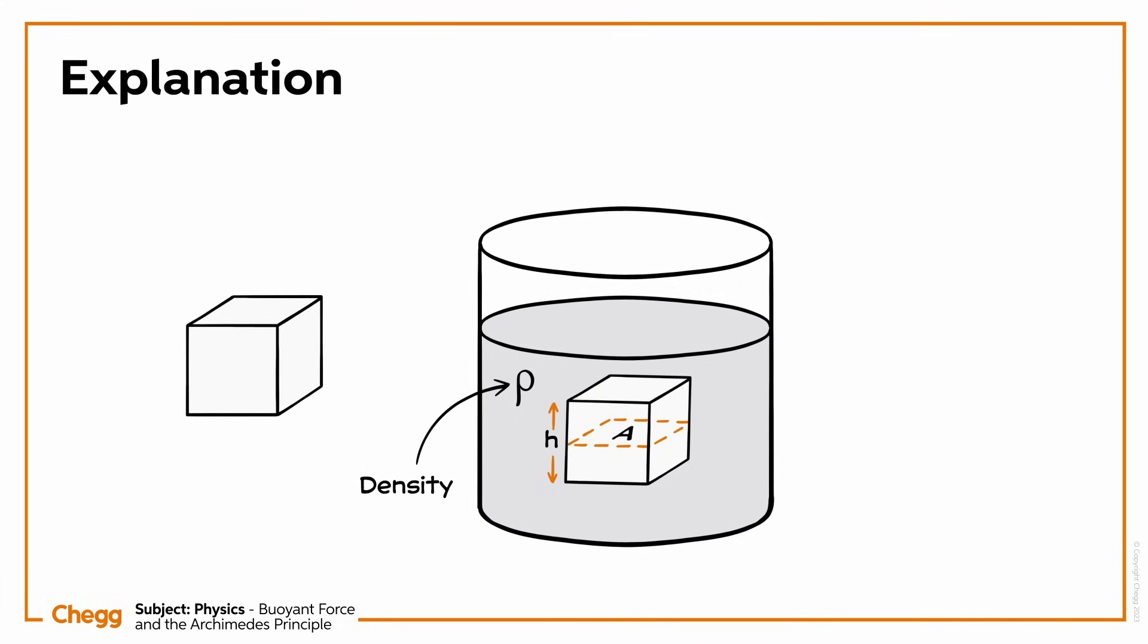Since the block is symmetrical, the pressure on the left balances the pressure on the right and the pressure on the front balances the pressure on the back.